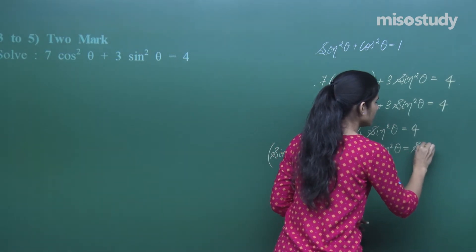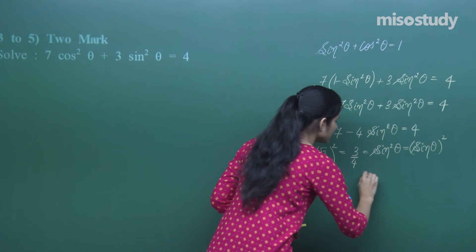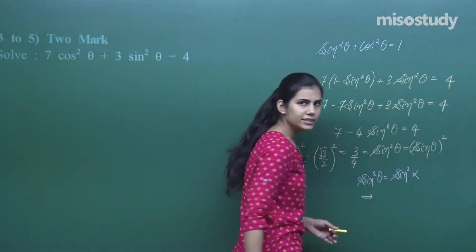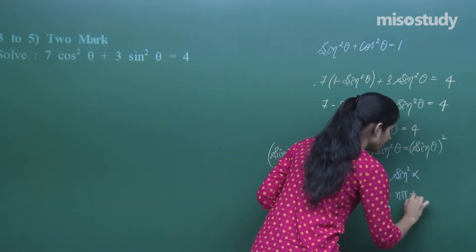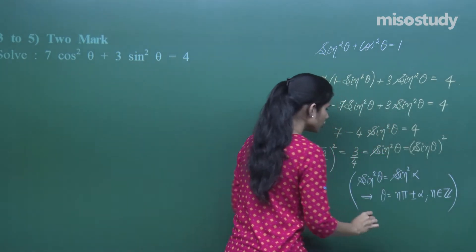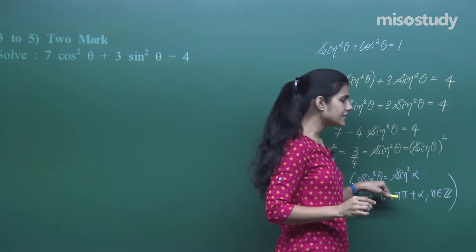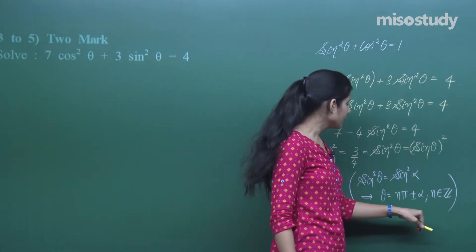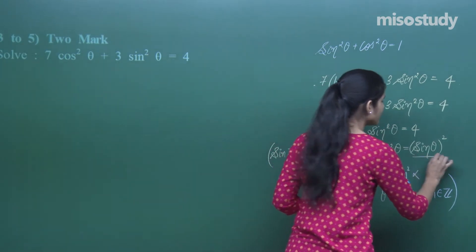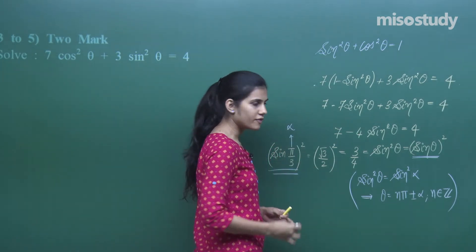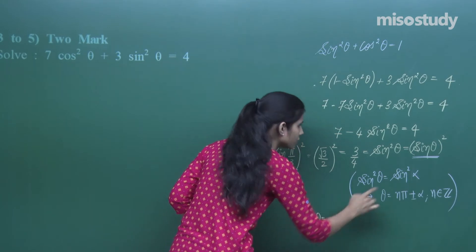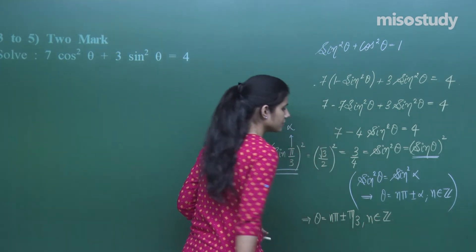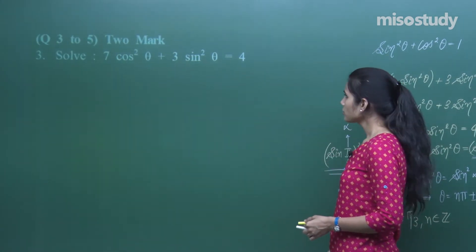Using the identity: sin²θ = sin²α implies θ = nπ ± α, where n is an integer. Here sin²θ = sin²(π/3), so π/3 plays the role of α. Therefore the solution is θ = nπ ± π/3, where n is an integer.